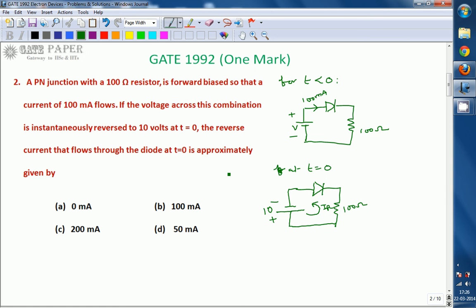That small time is how much time it requires to go into the full reverse bias. Before that full reverse bias, the diode is going to act as a short circuit. So whenever the diode is acting as short circuit...